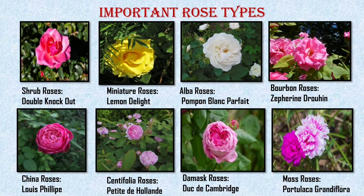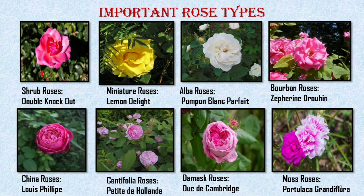Bourbon roses were first introduced in France in 1817 and are suspected to be a cross between China roses and Damask roses — examples: Madame Isaac Pereire, Zephyrine Drouhin, etc. China roses tend to be resistant to diseases but are tender and susceptible to cold weather — example: Louis Philippe. Centifolia roses, also known as cabbage roses because the petals are packed tightly together — examples: Petite de Hollande, Rose de Meaux. Damask roses have a romantic appeal — example: Duke of Cambridge. Moss roses bloom once each year with fragrant blooms in a wide selection of colors — examples: Portula, Grandiflora, Crested Moss, etc.